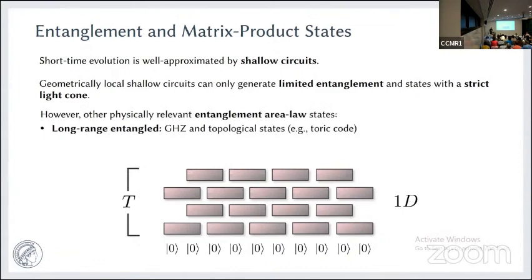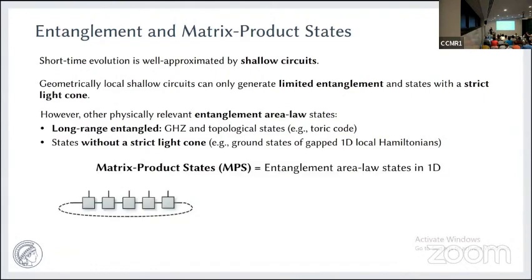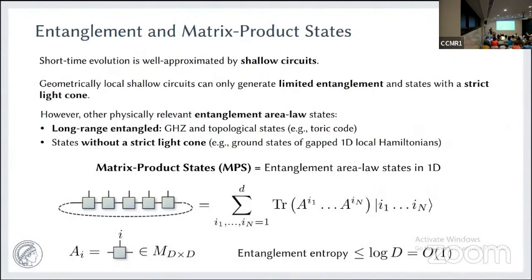These are relevant states, but there are other states with low entanglement that are also relevant. For instance, GHZ states and topological states have low entanglement but are very different because they have long-range correlations. From a many-body perspective in one dimension, local gapped Hamiltonians have ground states with weak correlations, but they don't satisfy the strict light cone. So it is relevant in 1D to look at states that satisfy the entanglement area law, which means they are tensor network states known as matrix product states. These are defined from tripartite tensors contracted appropriately, and every 1D area law state can be written in this form.